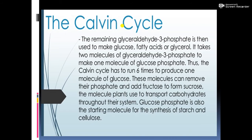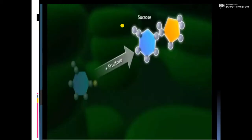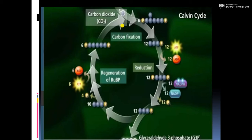It takes two molecules of glyceraldehyde-3-phosphate to make one molecule of glucose phosphate. Thus, to make one molecule of glucose, the Calvin cycle has to run six times. These molecules can remove their phosphate and add fructose to form sucrose — the molecule plants use to transfer carbohydrates throughout the system. Glucose phosphate is also the starting molecule for the synthesis of starch and cellulose. This completes the C3 carbon reduction cycle of the Calvin cycle.